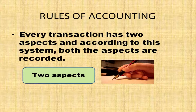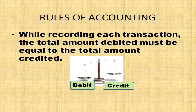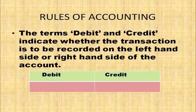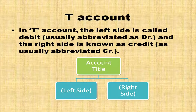Every transaction has two aspects according to the Double Entry System. Both the aspects are recorded. While recording each transaction, the total amount debited must be equal to the total amount credited. Debit means the transaction is to be recorded on the left hand side. Credit indicates the transaction is to be recorded on the right hand side of the account. What will be the format of the account?